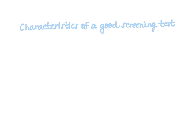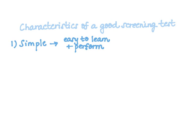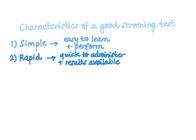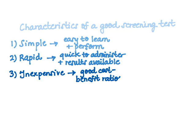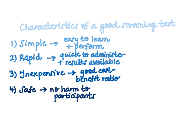First up: what are the characteristics of a good screening test? There are five things we look for. Number one: it is simple, meaning it is easy to learn and perform. Number two: it is rapid, meaning the test is quick to administer and results are available rapidly. Number three: the test is inexpensive, meaning it has a good cost-benefit ratio. Number four: the test should be safe to administer, meaning no harm will come to participants.